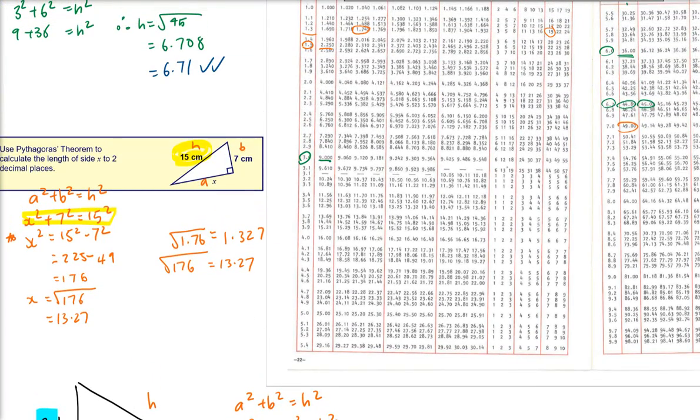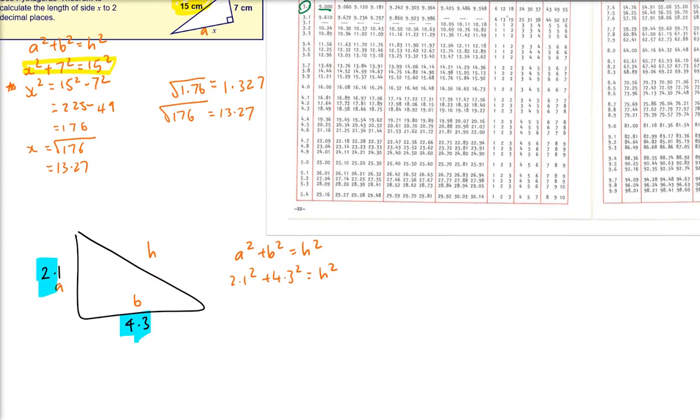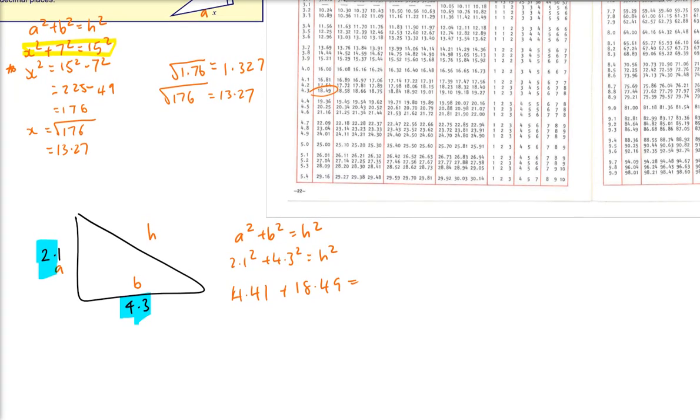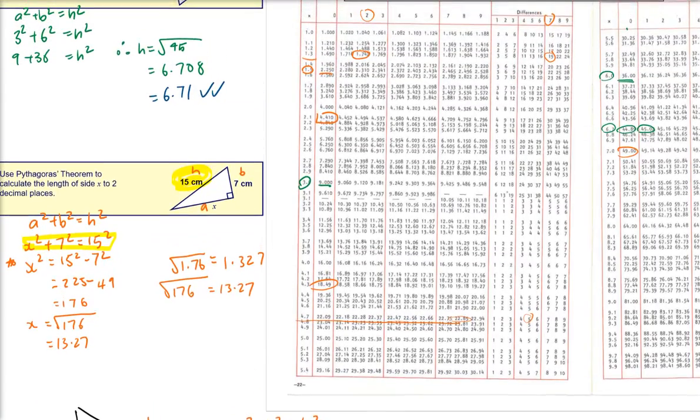So 2.1 squared, 4.41 plus 4.3 squared, 18.49 is equal to h squared. So now we have to do that math, so 4941, that's going to be 0.9, so it's going to be 22.9 is h squared. Now we're going to try and find 22.9, so 22.9 is pretty close. That's 22.9 there isn't it, that's 4.7.